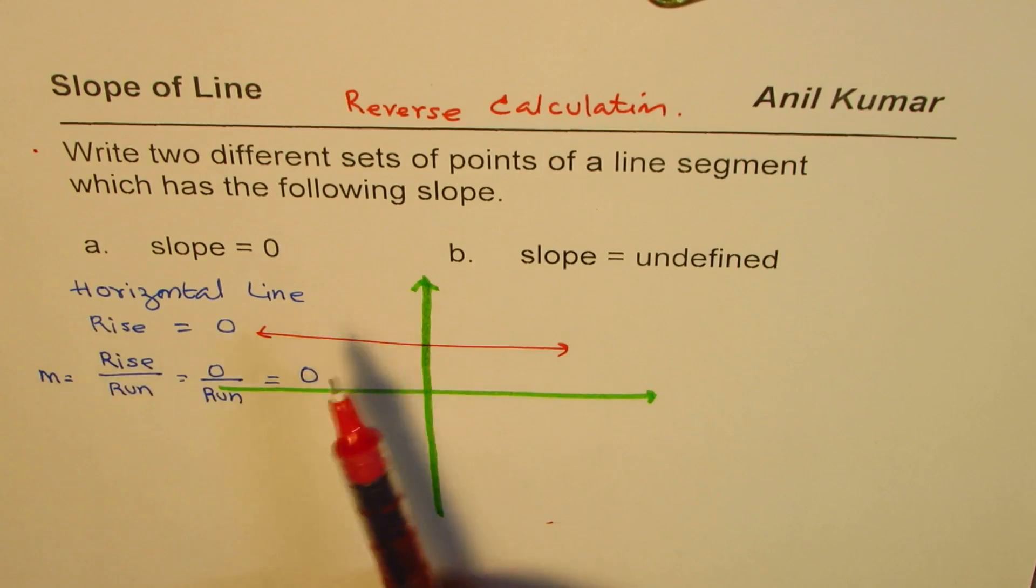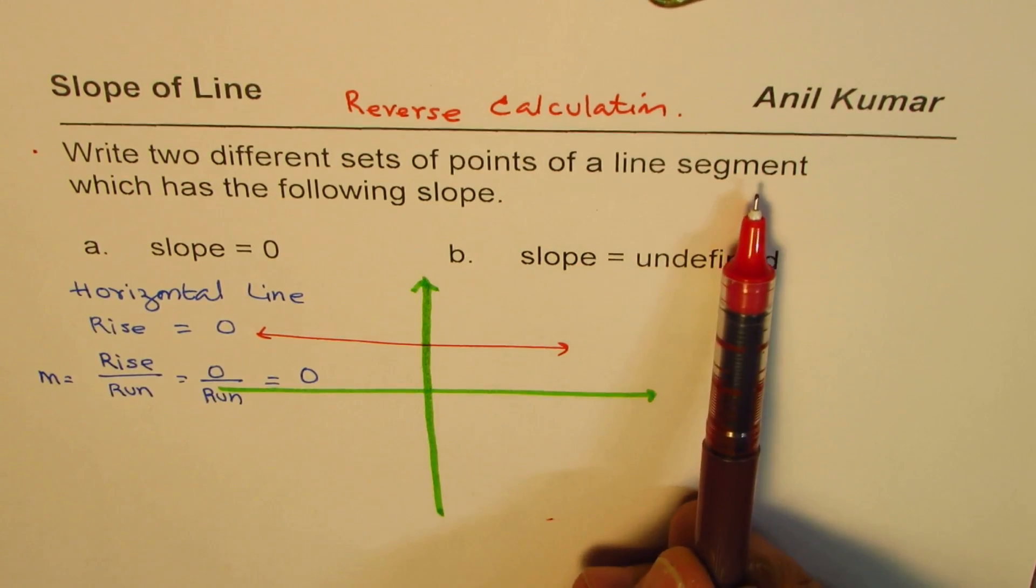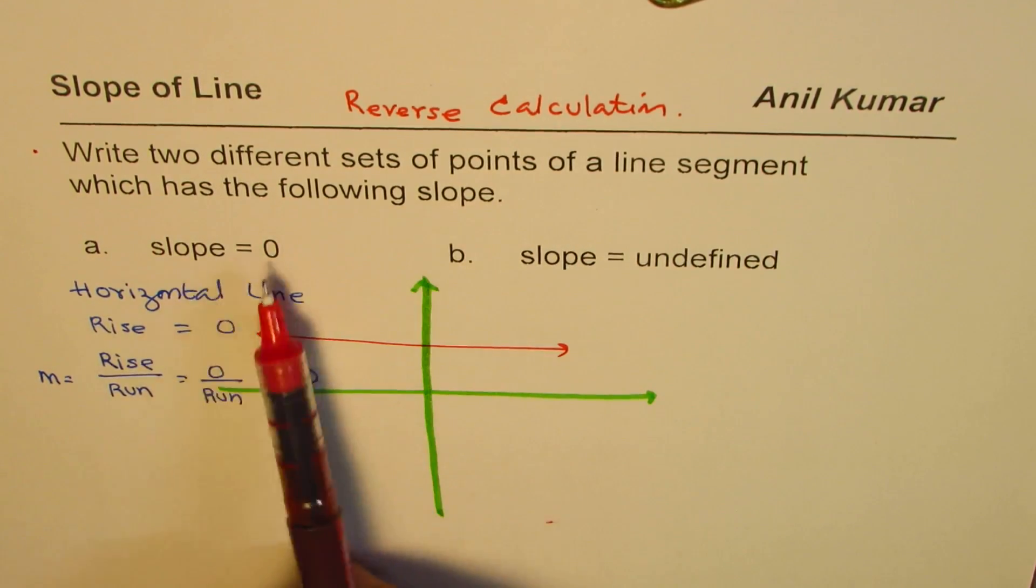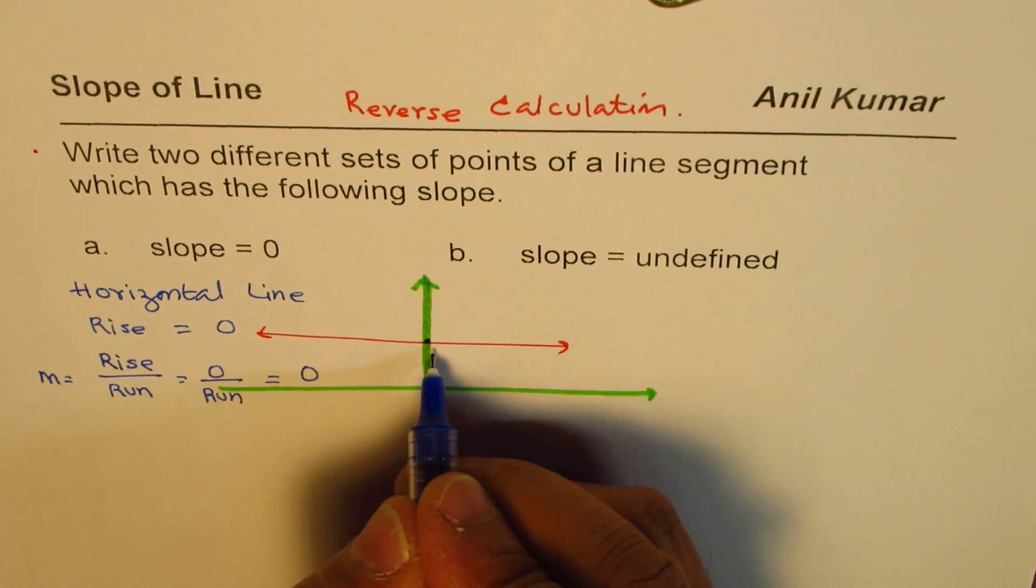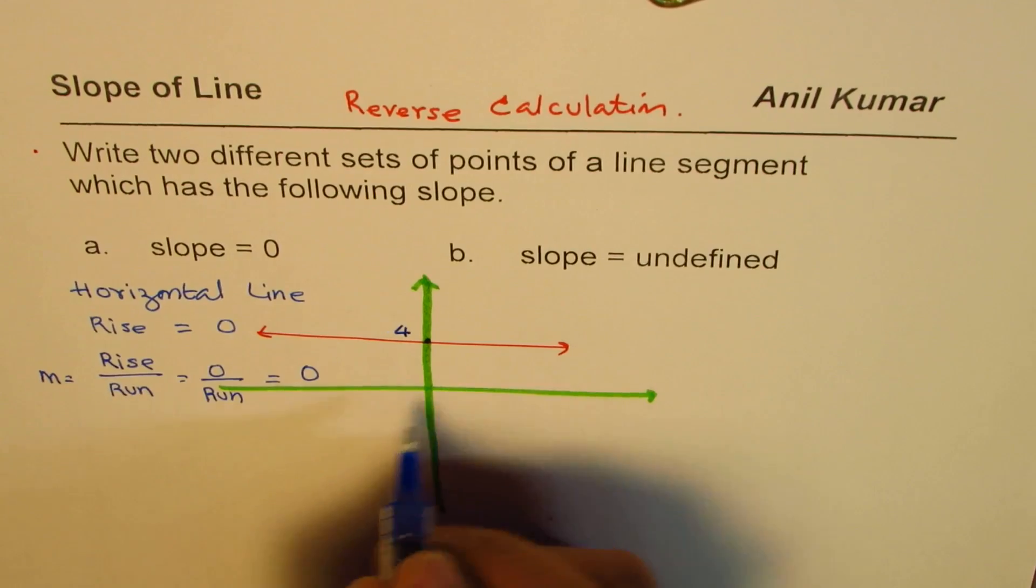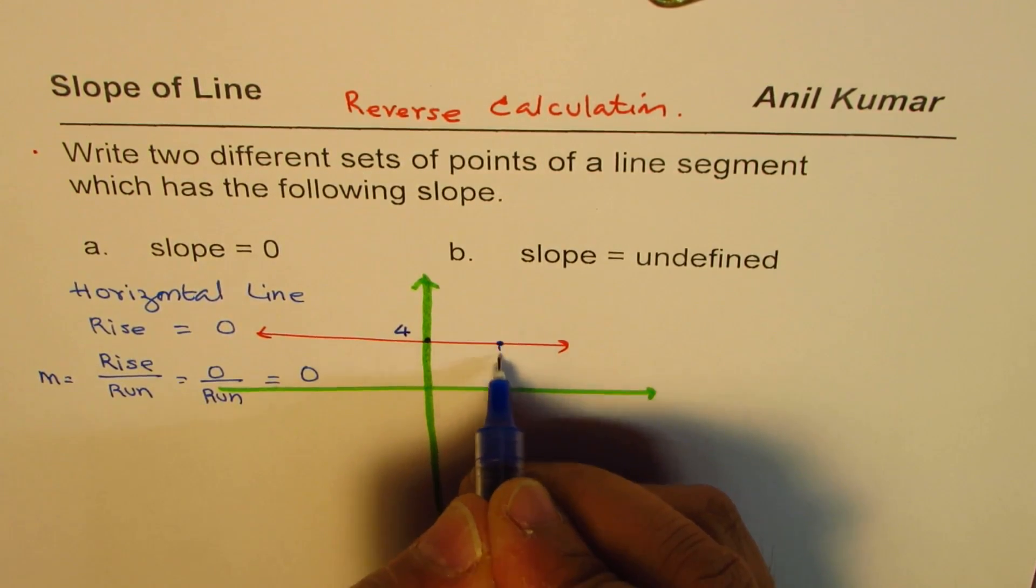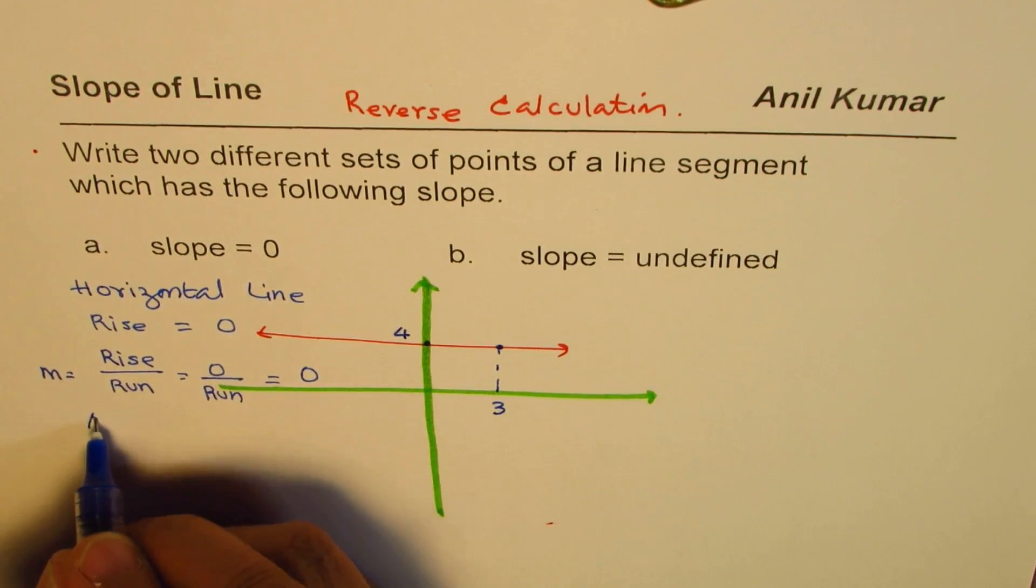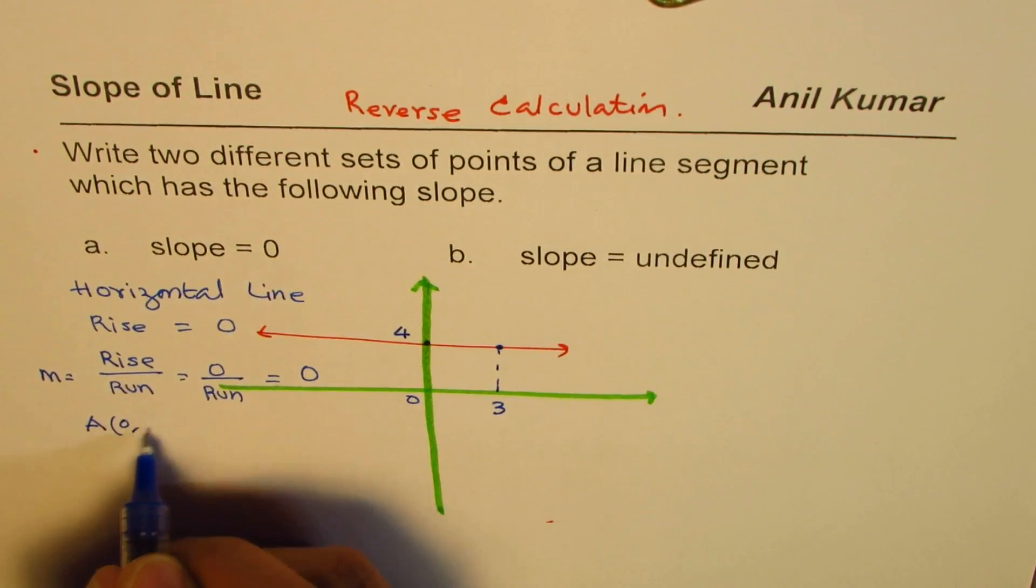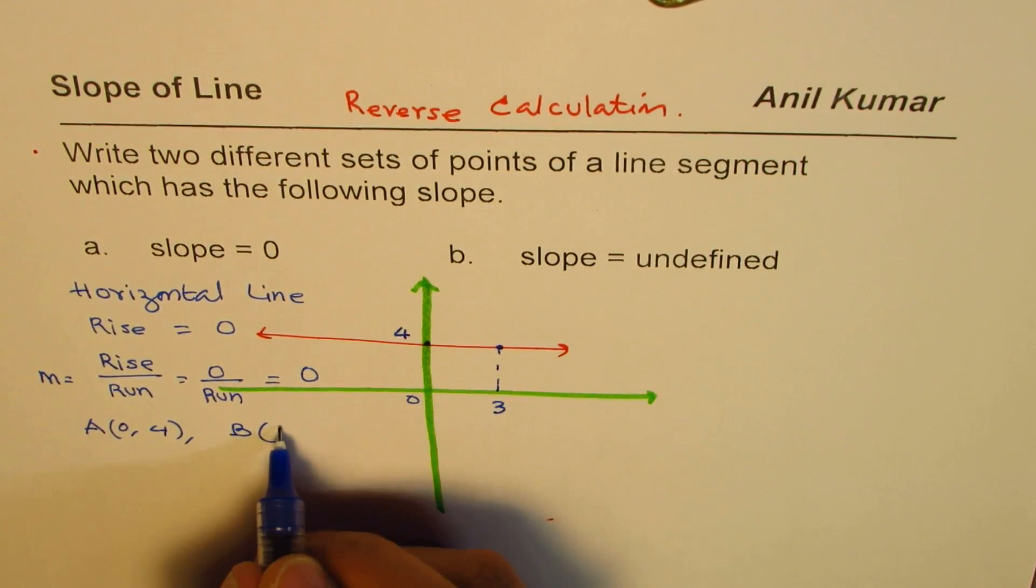Let's get back to the question. It says write two different sets of points of a line segment which has slope zero. In that case, if I choose this point to be, let's say, y-intercept of four, then any other point could be: the x value could be three but the y value remains four. So one set could be point A with coordinates (0, 4) and point B (3, 4).